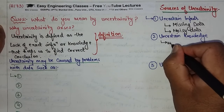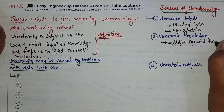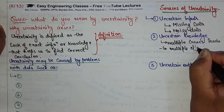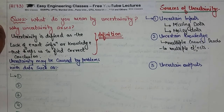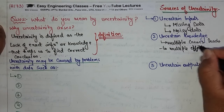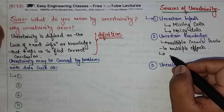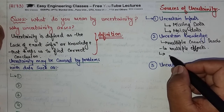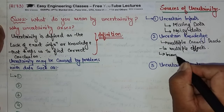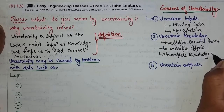The second source is uncertain knowledge. Multiple causes lead to multiple effects. Uncertain knowledge also involves incorrect and incomplete knowledge of the domain, as well as incomplete knowledge of causality in the domain.